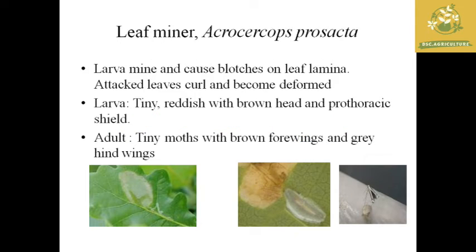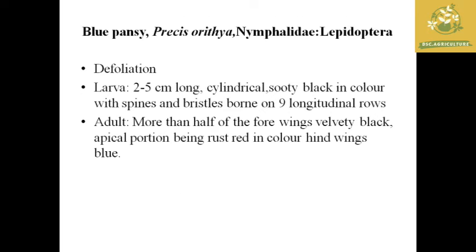The next pest is the leaf miner, with scientific name Acrocercops proscripta. The larvae mine inside the leaves and stems. They attack the leaf, causing it to curl and become deformed. The larva is tiny with a red body and brown-headed prothoracic shield. The adult is a tiny moth with brown forewings and gray hindwings.